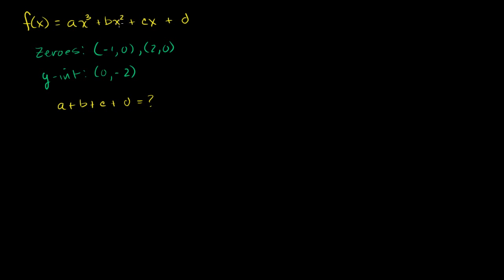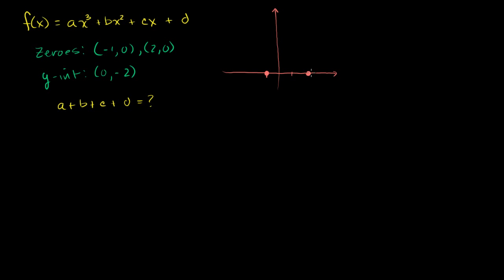Let's think about what a third degree polynomial looks like, and what we mean when we say zeros. Let me draw a little bit of a graph. A third degree polynomial can have as many as three zeros, and zeros are just the points where the function is equal to zero. So we have a zero at (-1, 0) and a zero at (2, 0). They also told us the y-intercept at (0, -2), so it intersects the y-axis right there.